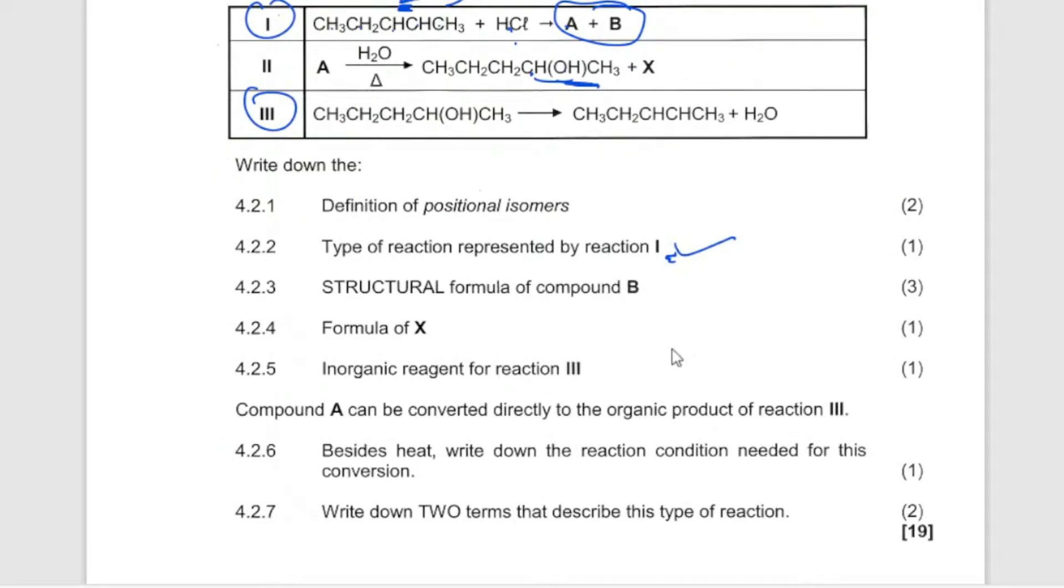And then we go to this one. We are saying write the structural formula of compound B. Okay, we are done with that. Formula of X. Now where is X? X, now remember, I have this which I added on A. So now this is hydrolysis. I don't know why they brought it back, because they brought it already before. There is a question I saw where they are asking about hydrolysis. So automatically this plus this, it gives you that.